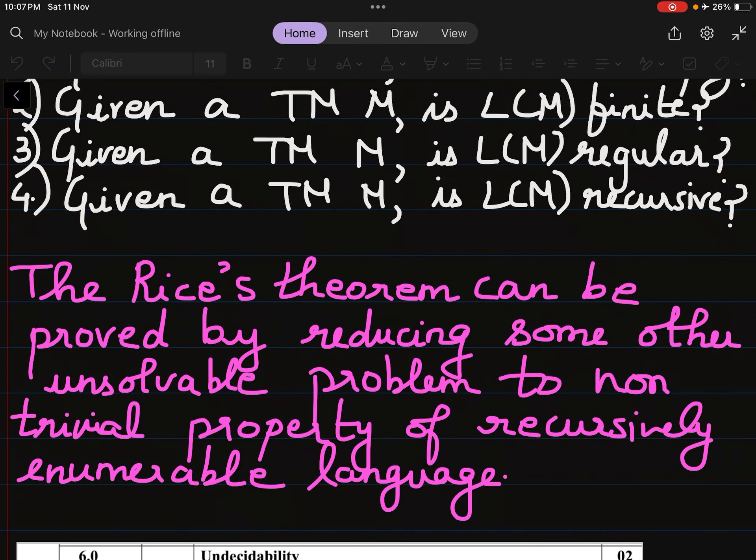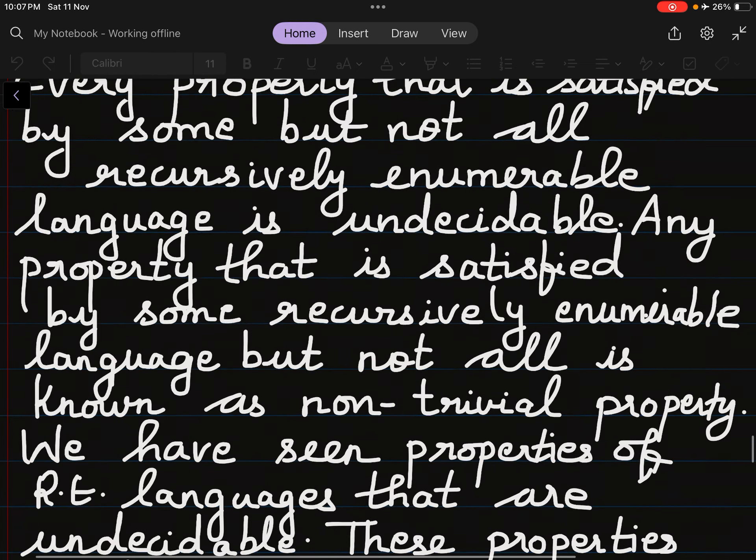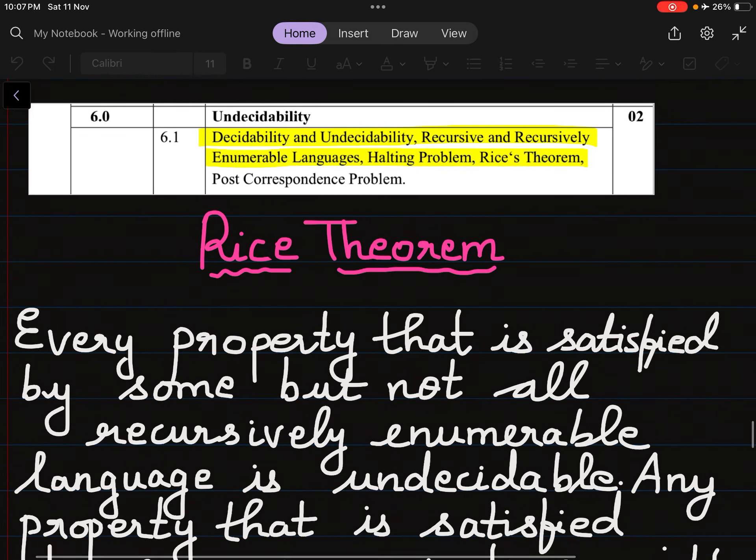Rice's theorem can be proved by reducing some other unsolvable problem to a non-trivial property of recursively enumerable languages. So this is all about Rice's theorem.